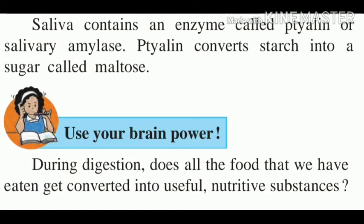Saliva contains an enzyme called Ptylin, or Salivary Amylase. Salivary amylase is an enzyme which gets mixed with the food that we are crushing with the help of the teeth. Ptylin converts the starch into a sugar called Maltose. Maltose is a form of sugar.